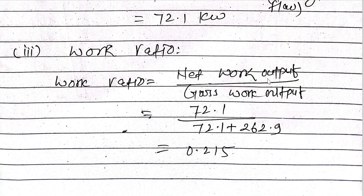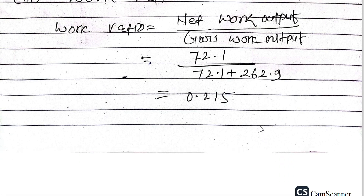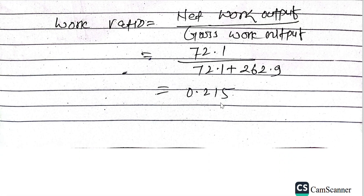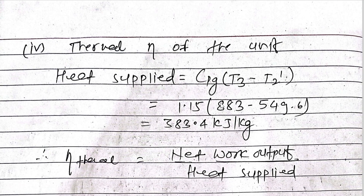Now calculating the work ratio: Work ratio = net work output / gross work output = 72.1 / (72.1 + 262.9) = 72.1 / 335 = 0.215.